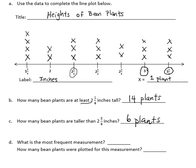Question D says, what is the most frequent measurement? This is where it's nice to have the line plot, because all we have to do is look to see which one reaches the highest with the X's, and that would be 1 and 3/4 inches. It has the most X's, so we'll put 1 and 3/4 inches. And how many beans were plotted for this measurement? There are 4 of the plants at that height.